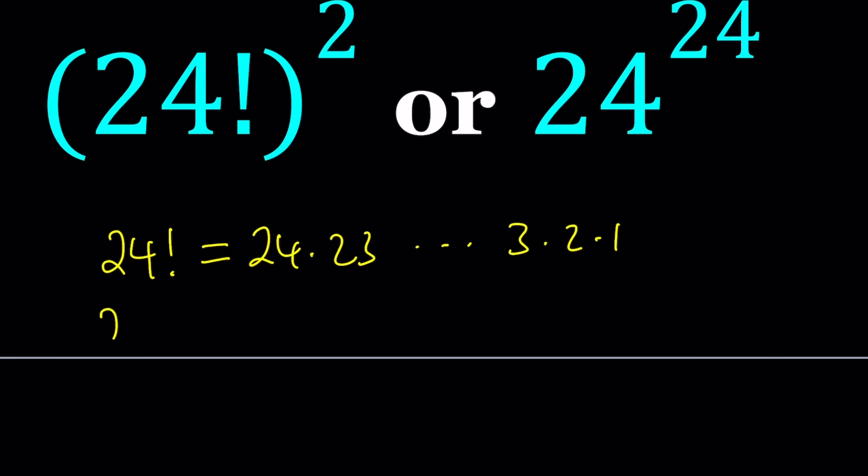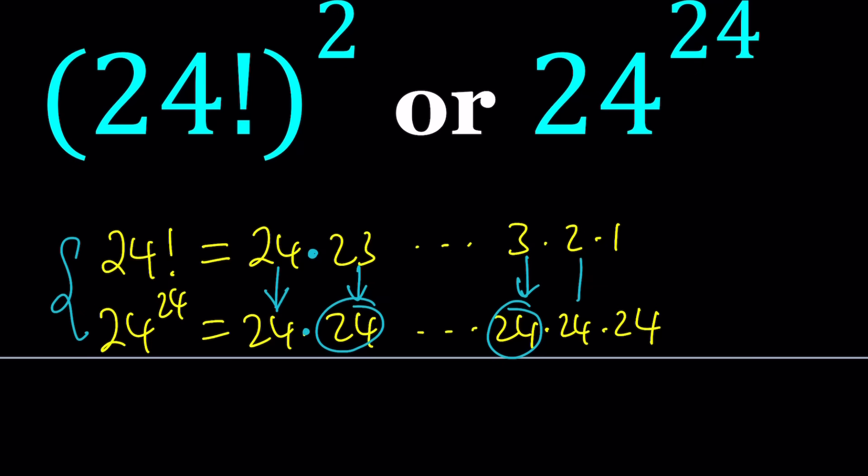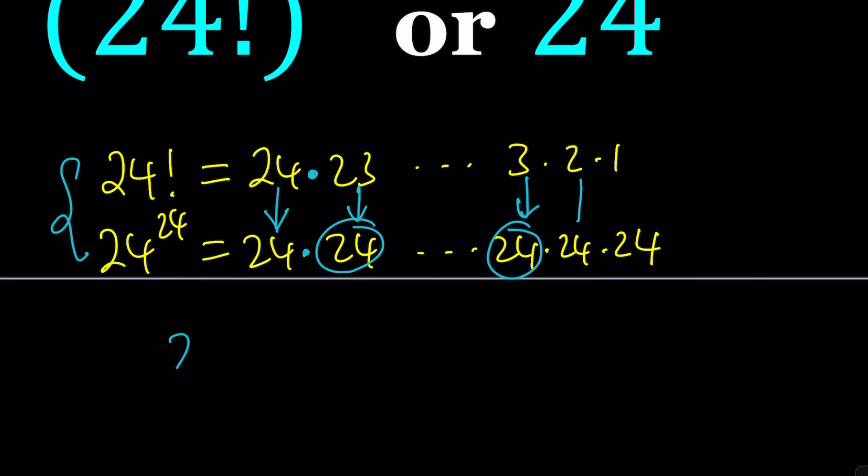24 to the power of 24 is also a product, but this time instead of reducing the numbers every time, you use the same number over and over. When you compare these two products, every factor in the second product is greater than or equal to each factor in the first product. We can safely say that 24 to the power 24 is greater than 24 factorial.